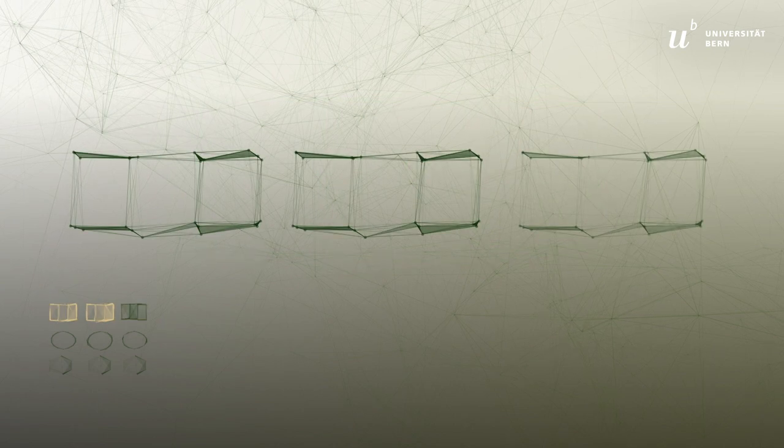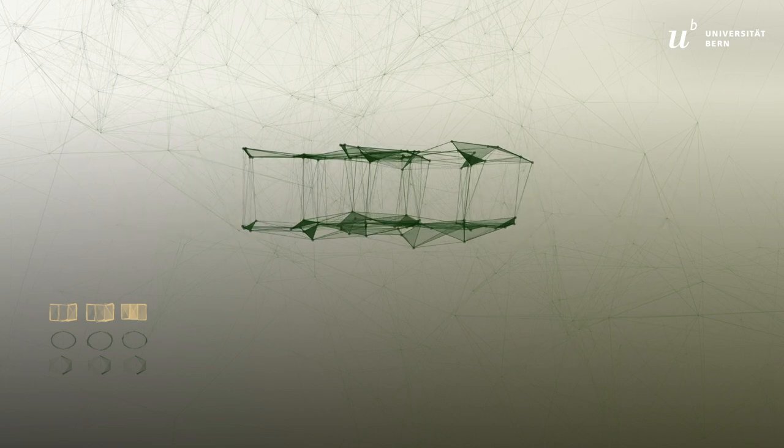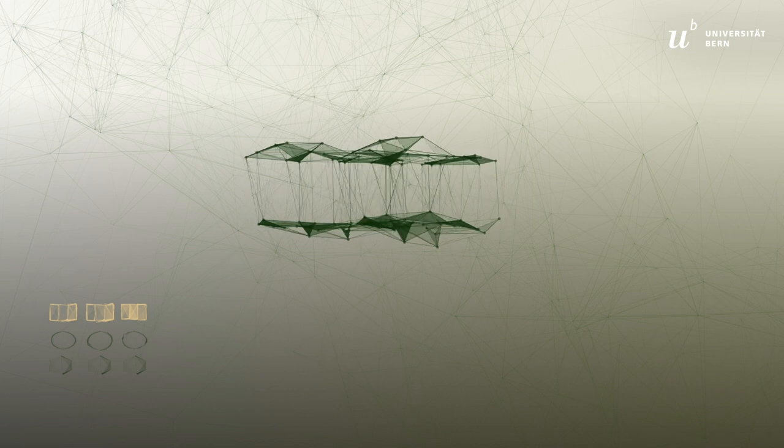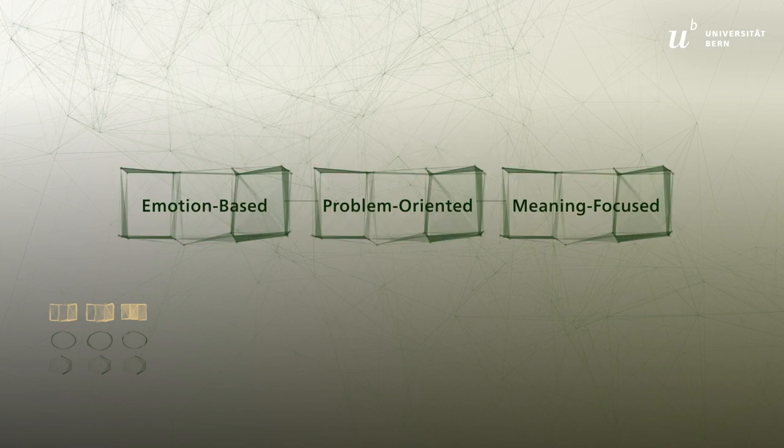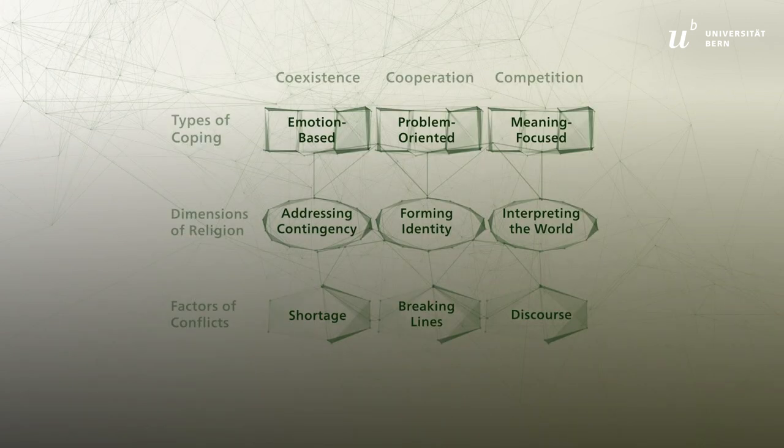Conflicts are often aggravated because emotional, factual, and interpretive levels get mixed up. This makes it essential to distinguish between the three coping strategies in the analysis of conflicts with religious dimensions. The concept of coping helps to extend the approach of conflict transformation. Through the integration of emotional and factual aspects, coping offers a means to better understand and deal with conflicts that cannot be resolved or transformed at a factual level. Now our model is complete.